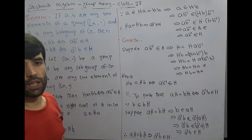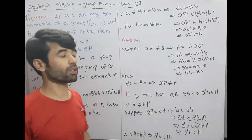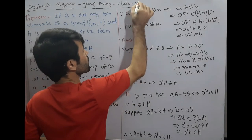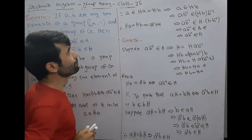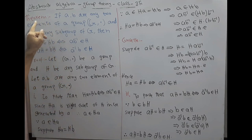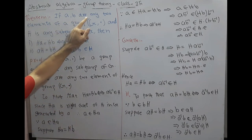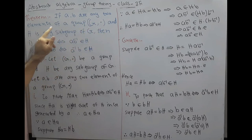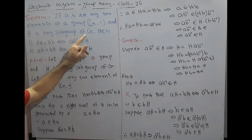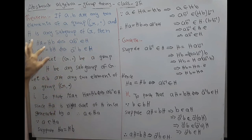Hi friend, welcome to the abstract algebra class. It is class 35. Here we will prove a theorem about cosets of a group. The theorem: if a and b are any two elements of a group G with respect to multiplication, and H is any subgroup of G, then two cases follow.